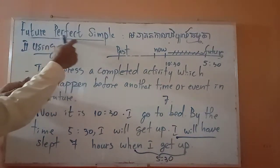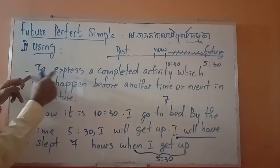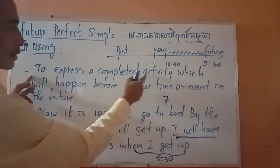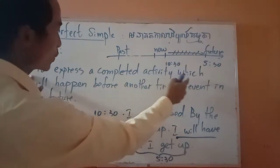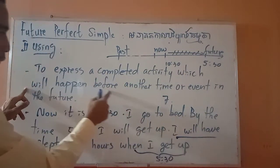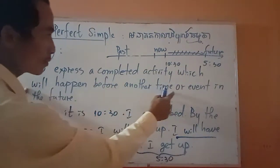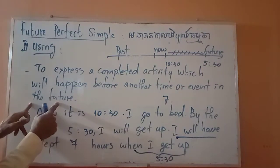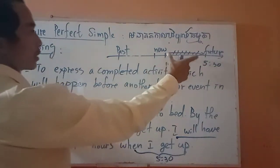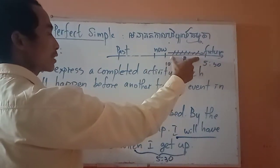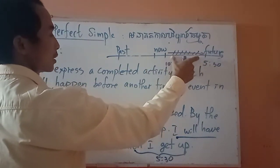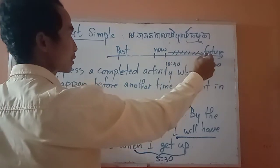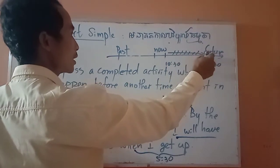Future perfect simple is used to express a complete activity which will happen before another time or even in the future. So an activity here that happened before another time or event here.